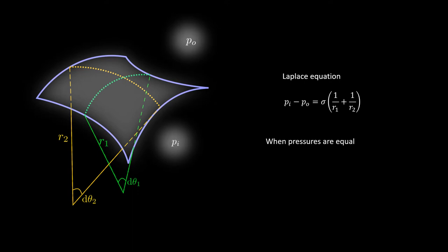When the pressures are equal, we can simply put the left-hand side to be zero, and that implies that the summation of the curvatures is equal to zero. It is clear that the film does not enclose any volume, meaning that it is exposed to the same pressure on either side of the film. The surface form would be such that the mean curvature has to be zero.